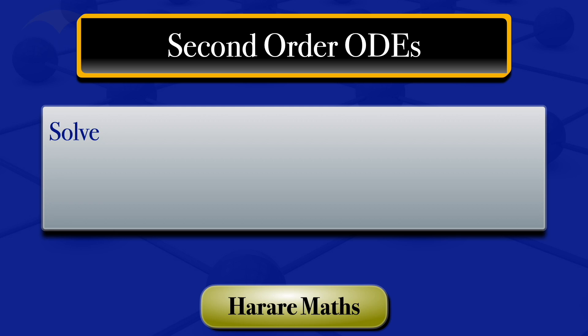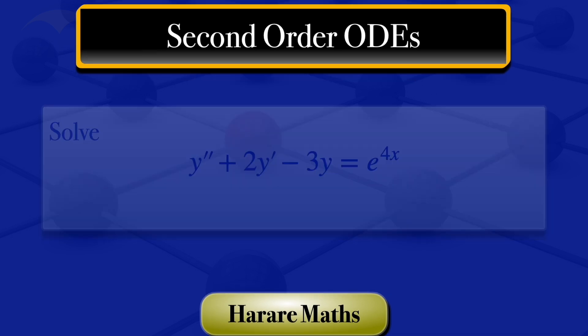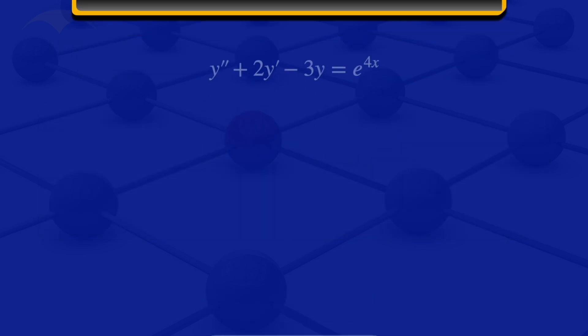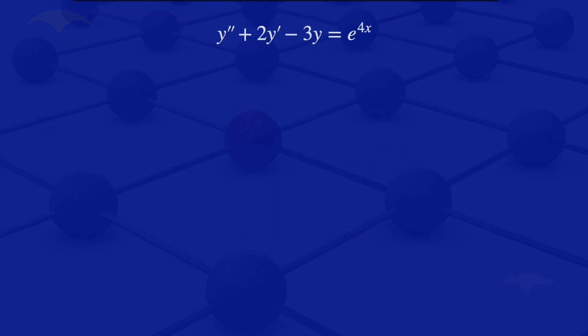In this video I'm going to solve the ODE y'' + 2y' - 3y = e^(4x). This equation that we are given is a second order non-homogeneous ODE.